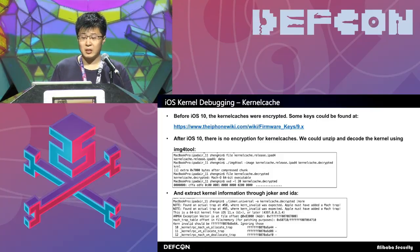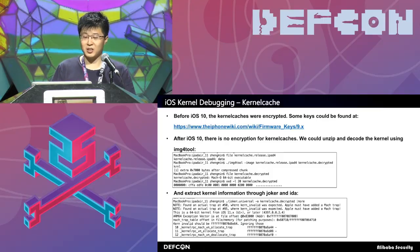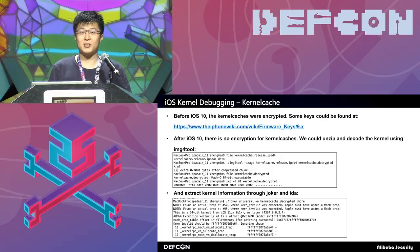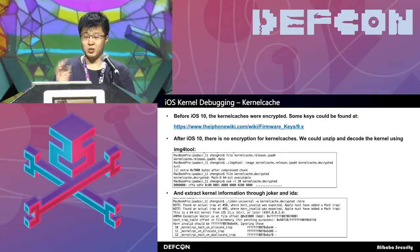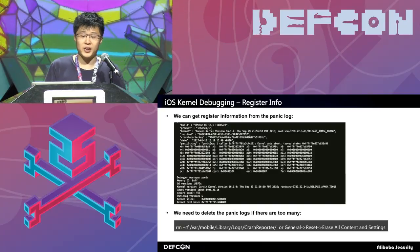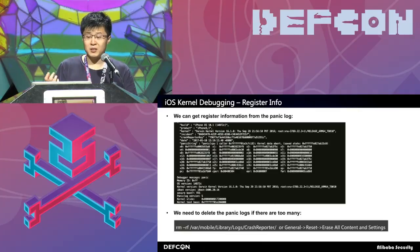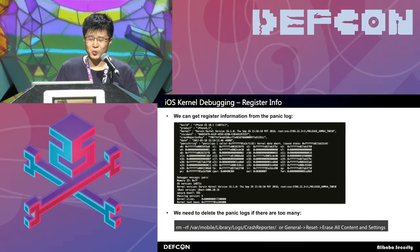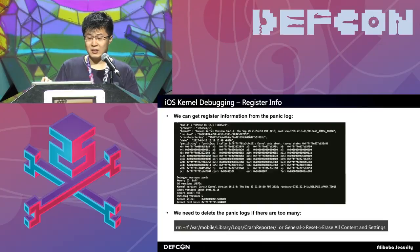After iOS 10, there is no encryption, but there is some encoding. So we need to unzip the kernel and decode it using the image4tool. After that, you can extract kernel information through joker and jtool. Note that there are no breakpoints in iOS, so the most common way to get register values is to use the panic log. Something to pay attention to: if there are too many panic logs on your phone, the system will stop generating new panic logs. So you need to delete the panic logs if there are too many. You can use these two methods to do that — one for jailbroken iOS and another for non-jailbroken iOS.